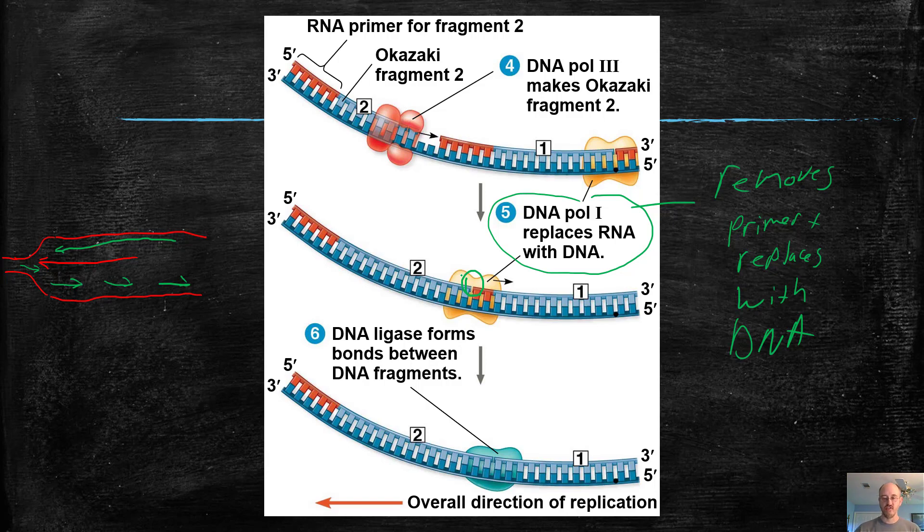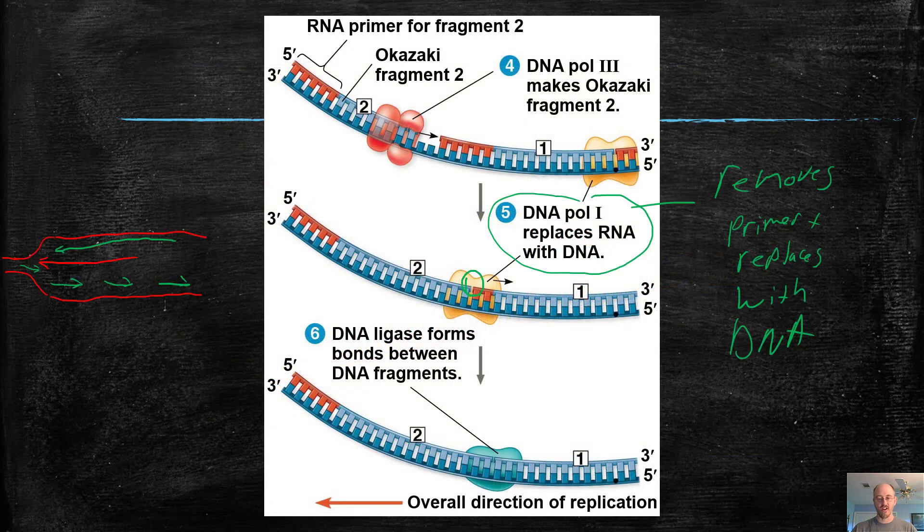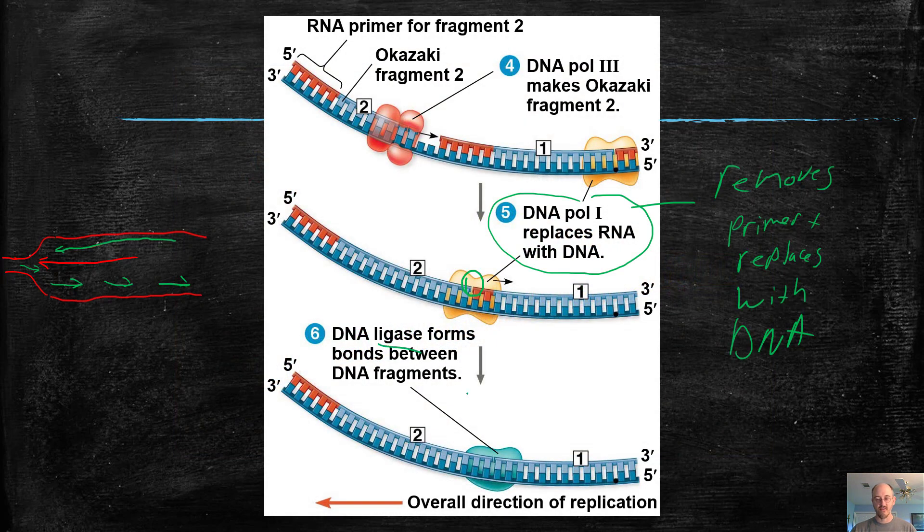So there's one more enzyme called ligase that glues that last bit of the backbone together. And it glues the Okazaki fragments back together again. You can see Okazaki spelled right here, Okazaki fragments. It glues them together. And now we have a complete strand of DNA.